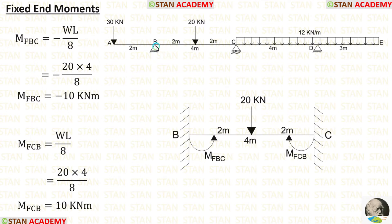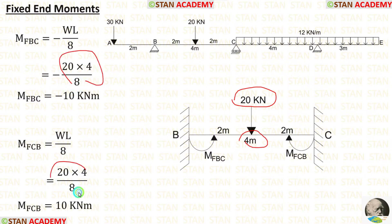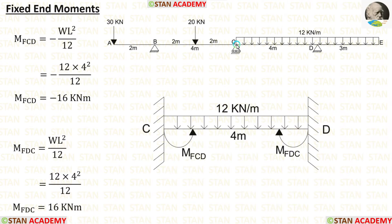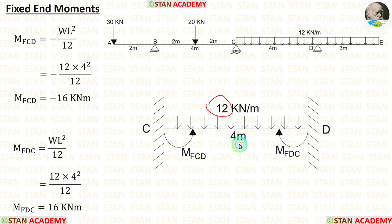For span BC with a central point load of 20 kN and L = 4 m, the fixed end moments are: M_BC = −WL/8 and M_CB = +WL/8, giving us the values of M_BC and M_CB. For span CD with UDL of 12 kN/m and L = 4 m, the formulas are −WL²/12 and +WL²/12, giving us M_CD and M_DC.